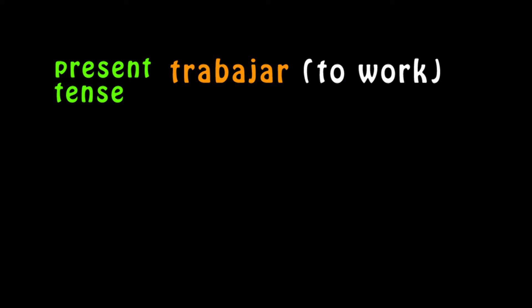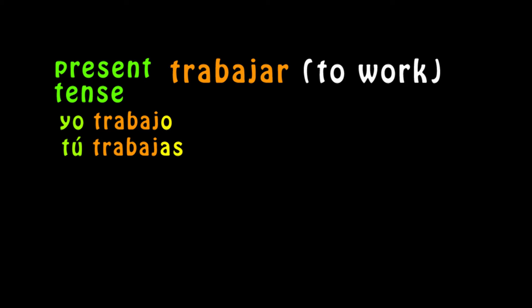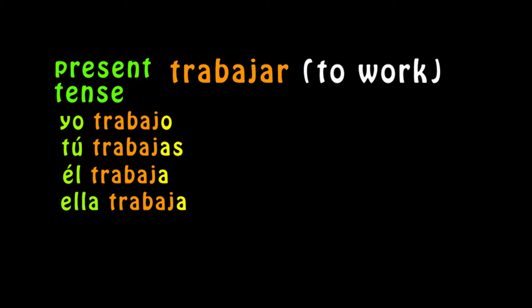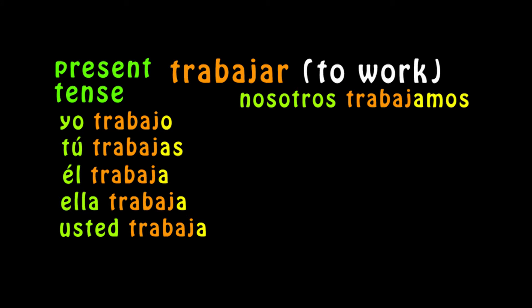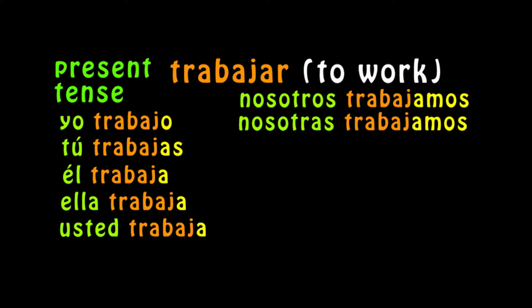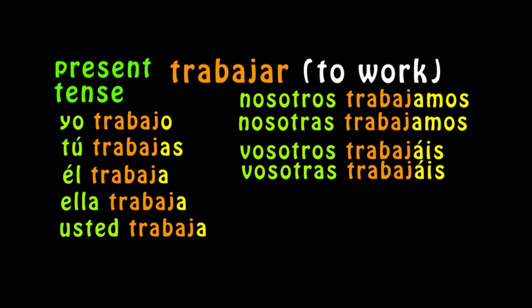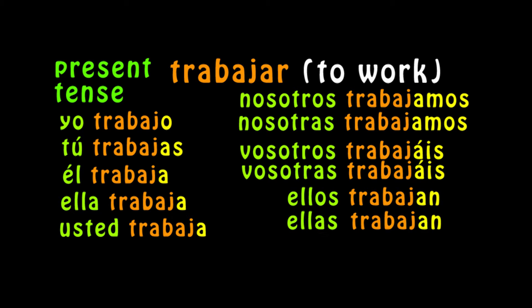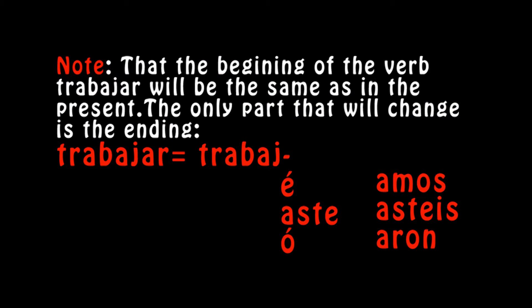Let's start with the present tense of the verb 'to work' — trabajar. Yo trabajo, tú trabajas, él trabaja, ella trabaja, usted trabaja, nosotros trabajamos, nosotras trabajamos, vosotros trabajáis, vosotras trabajáis, ellos trabajan, ellas trabajan, ustedes trabajan. Note that the beginning of the verb trabajar will be the same as in the present.